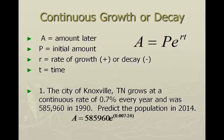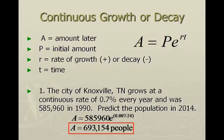Leave E as E — that's the button on our calculator, which actually stands for 2.71828. In our exponent, we have R and T in parentheses so we know we're multiplying them together. R is 0.007 as a decimal, moving that decimal two places to the left, and then times 24 years — the amount of time from 1990 to 2014. Type these numbers into your calculator and we get that the population was 693,154 people in the year 2014.